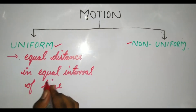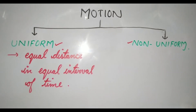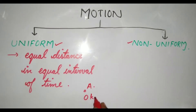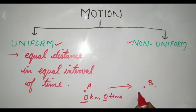Remember, in uniform motion the object is covering equal distance. Let's take an example — suppose someone is riding a bicycle. They start from point A where distance is zero and time is zero. The bicycle then reaches point B, where the distance covered is three kilometers and the time taken is 20 minutes.